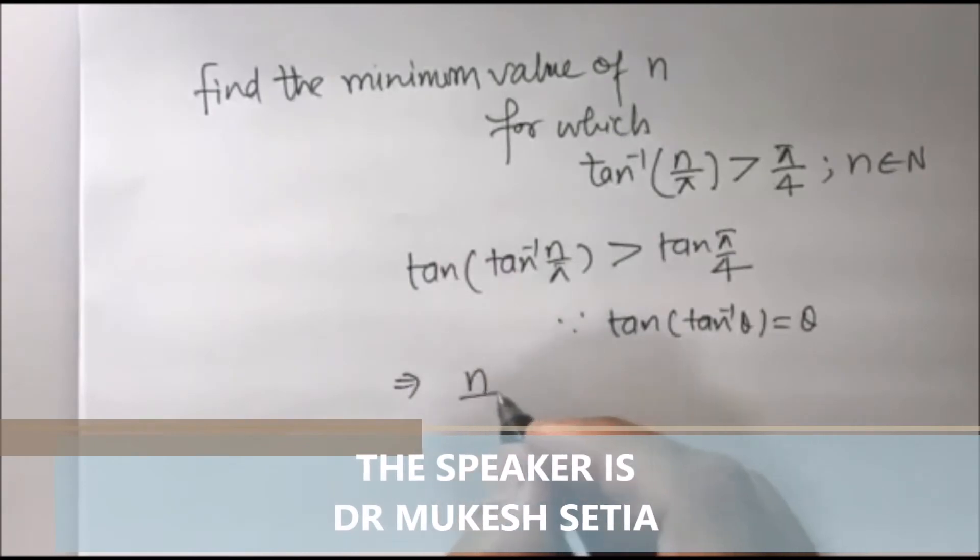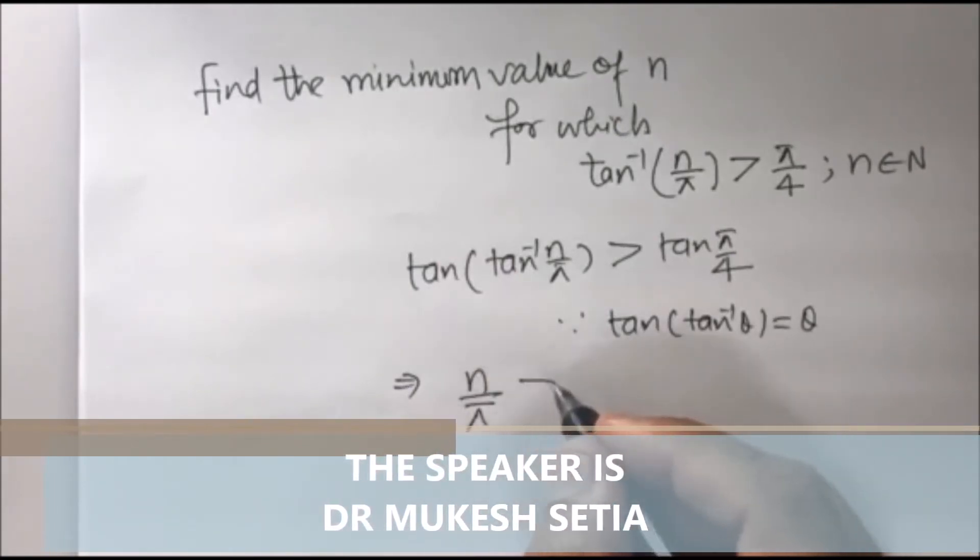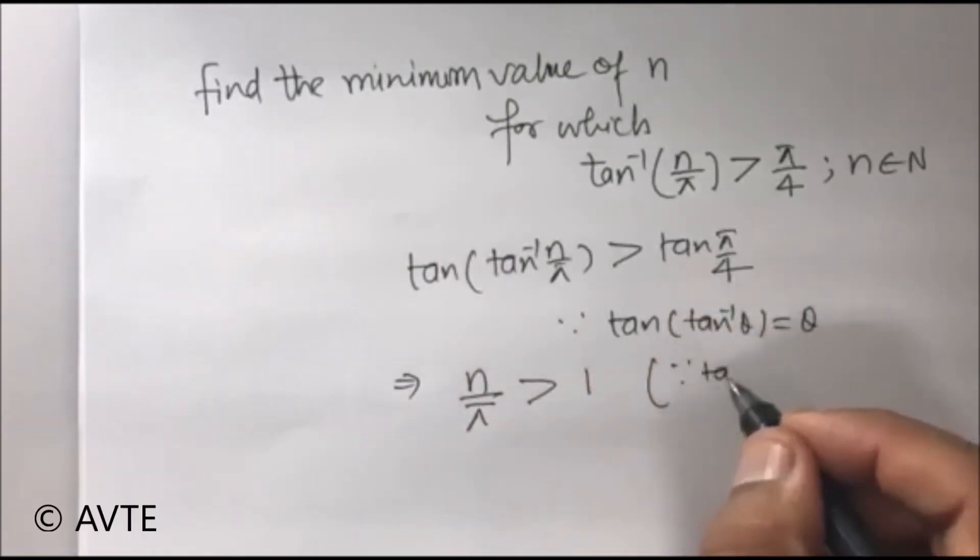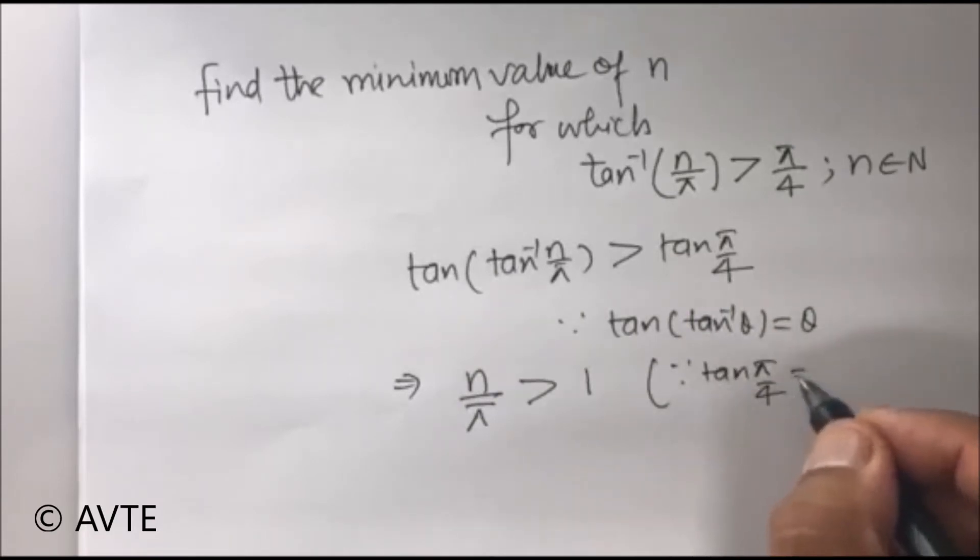With that, the left-hand side will turn to n upon pi which is greater than 1 because tan pi by 4 is equal to 1.